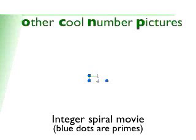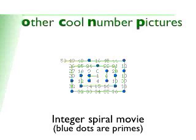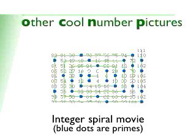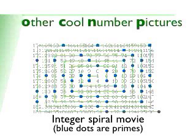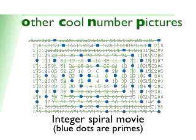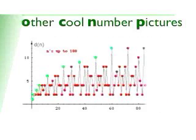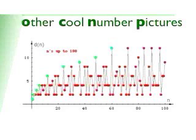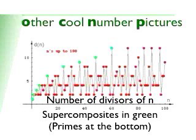And finally, we've got a couple of other cool number pictures. Here's an integer spiral. The blue dots are the prime numbers. Can you see any patterns? And here's a graph I bet you've never seen: the number of divisors of a number with n on the x-axis. The supercomposite ones are green. And the primes only have two divisors. They're lined up on the bottom.